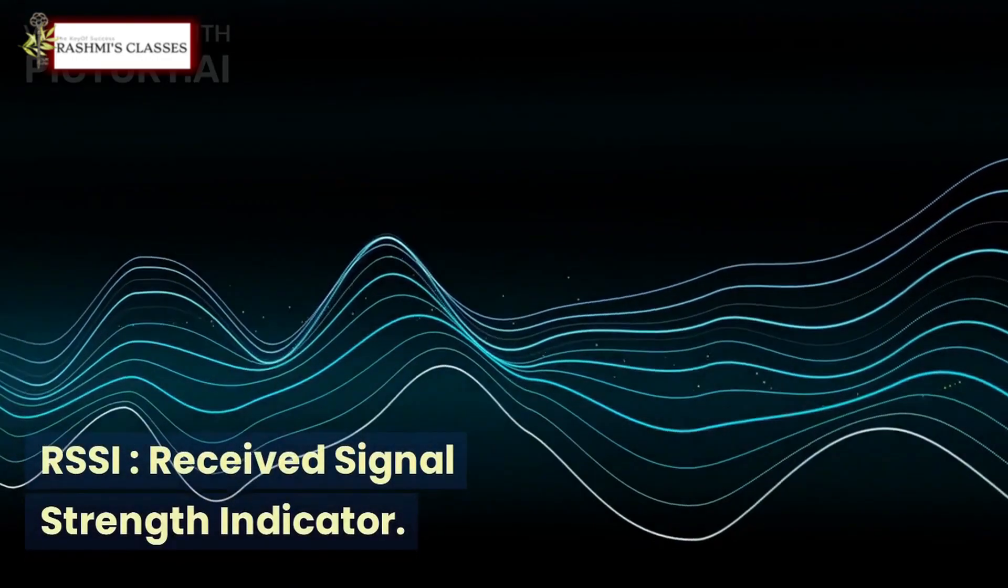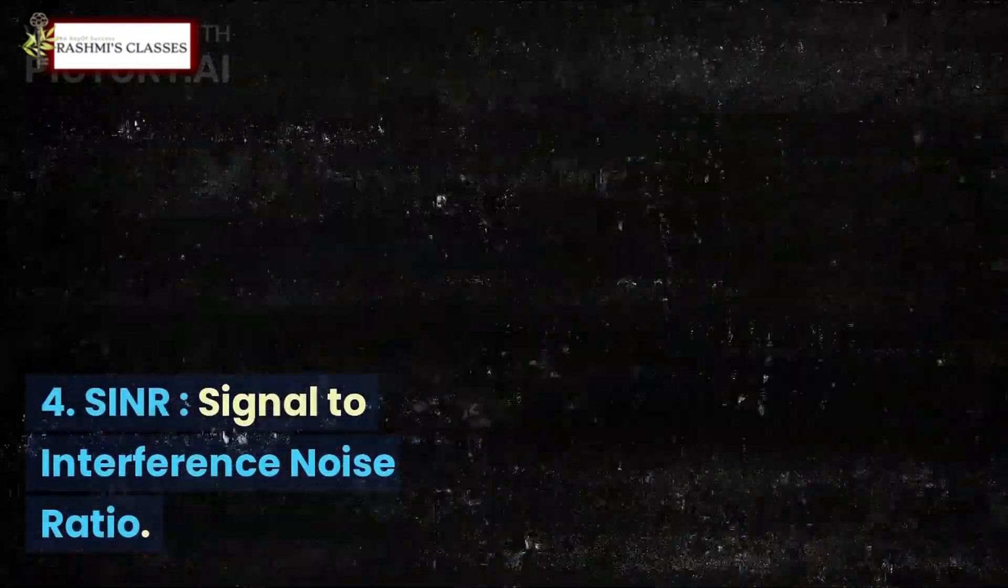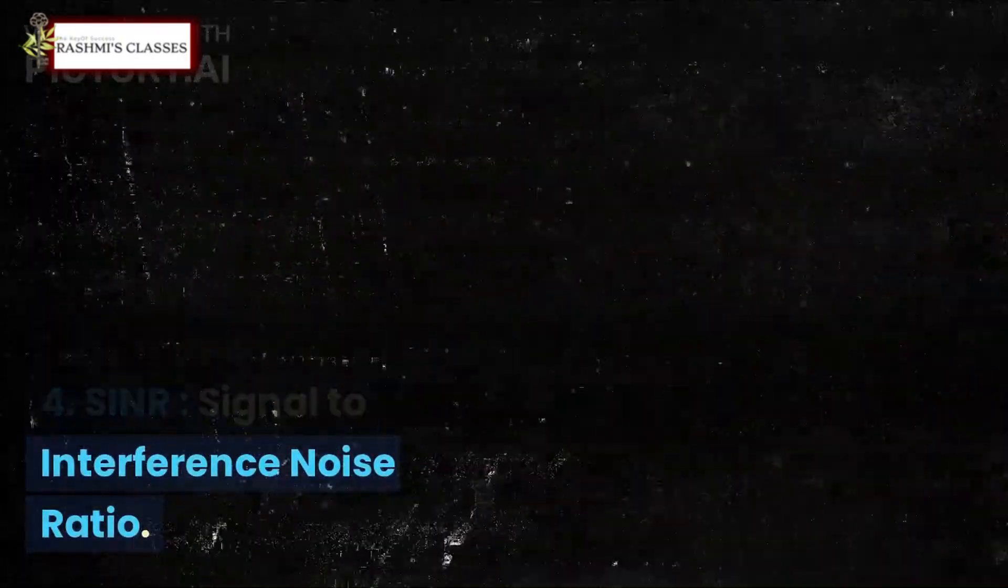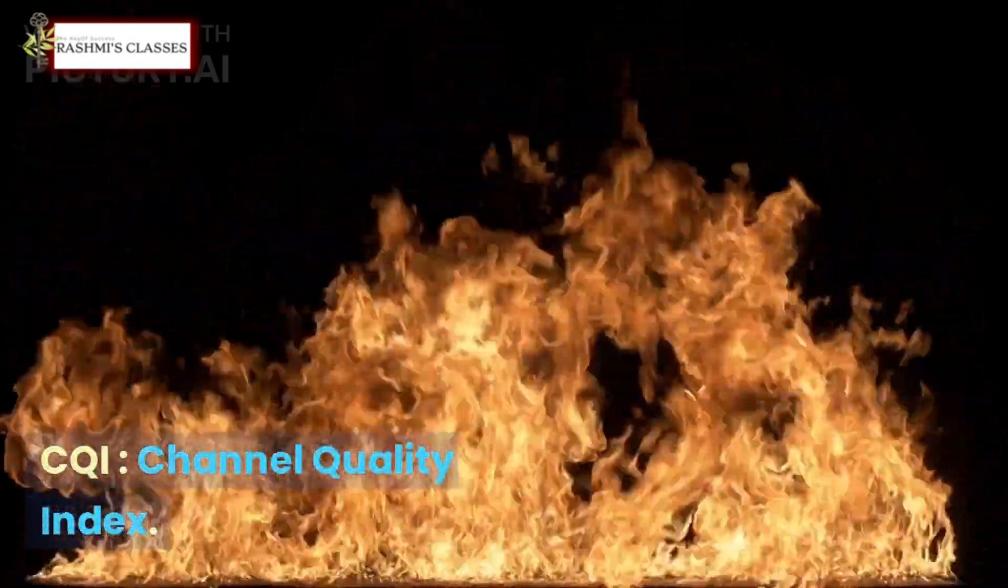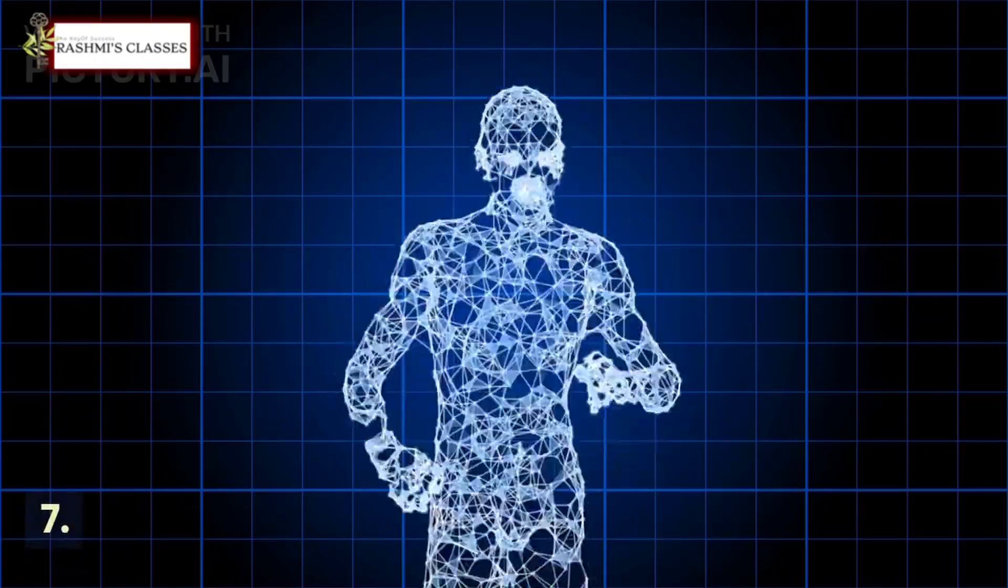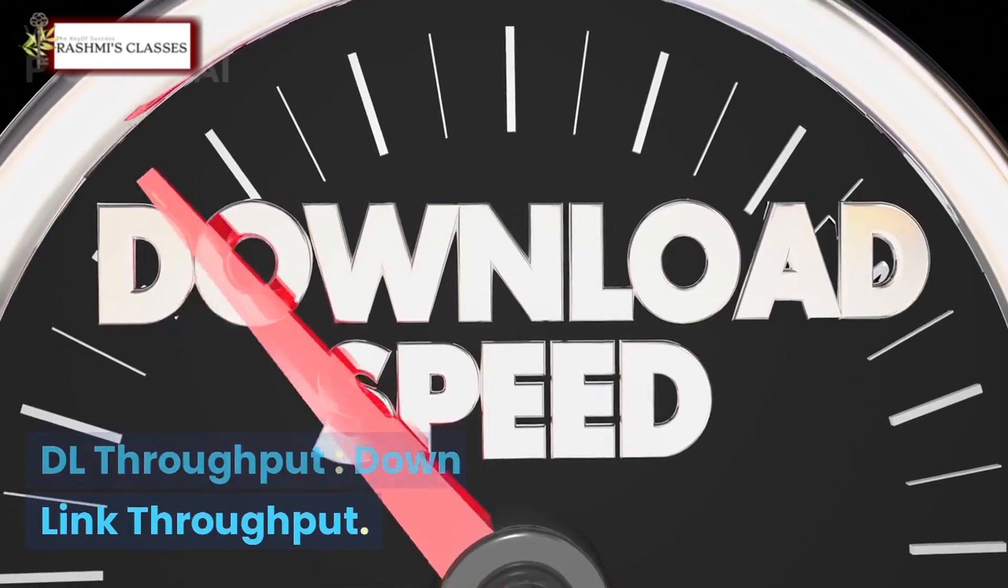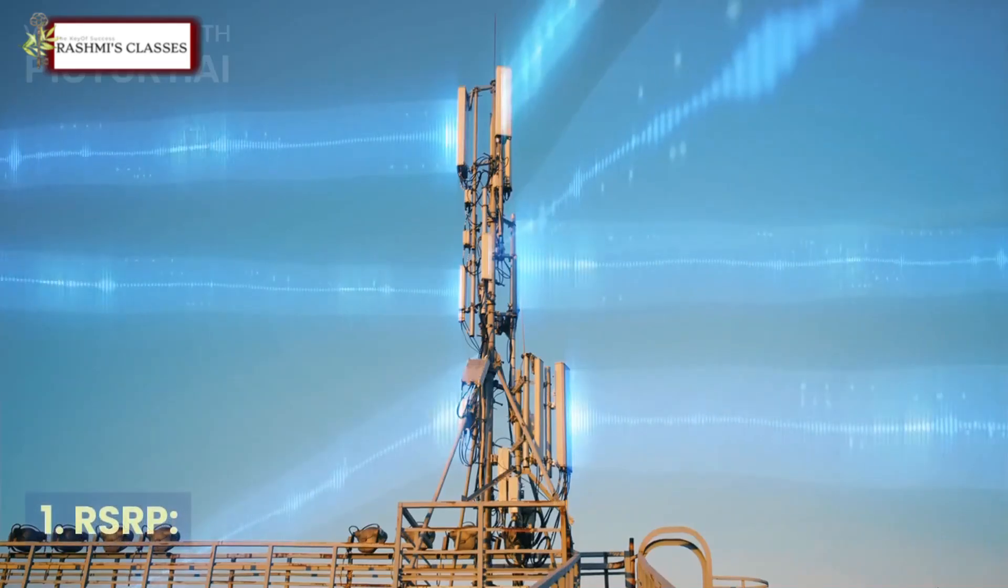4. SINR - Signal to Interference Noise Ratio, 5. CQI - Channel Quality Index, 6. PCI - Physical Cell Identity, 7. BLER - Block Error Ratio, 8. DL Throughput - Downlink Throughput, 9. UL Throughput - Uplink Throughput.